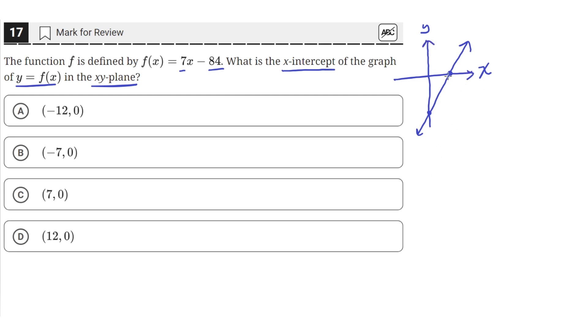So the x-intercept occurs always when the y-value is 0. And we have this function here, so we can just plug in 0 for y or f of x and solve for the value of x when y is 0.